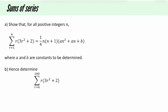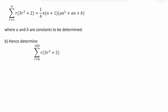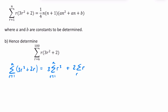For the first example, we are going to show that for all positive integers n this expression is true, where a and b are constants to be determined, then apply it to a question. I am going to start off with the left-hand side from r equals 1 to n. I am going to expand the bracket so that I get 3r cubed plus 2r, split it into two separate parts. So there is going to be a 3r cubed with the 3 at the front, and then a 2r with the 2 at the front, from r equals 1 to n.